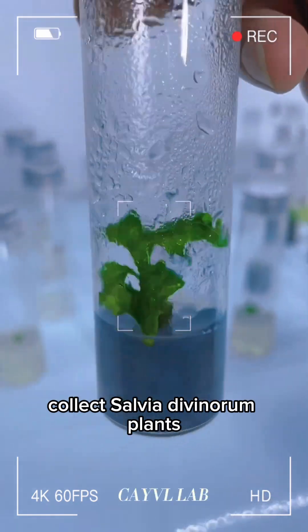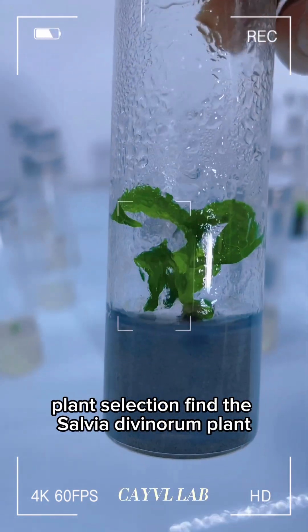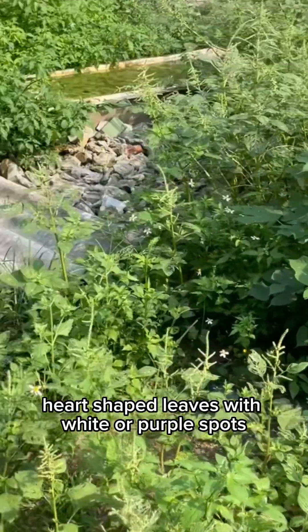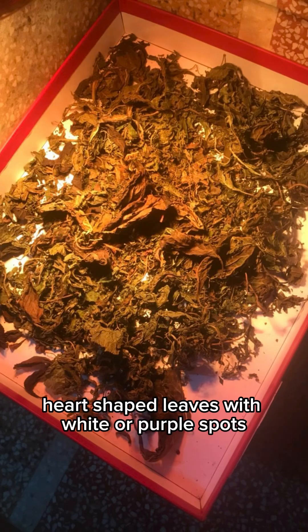Collect Salvia divinorum plants. Plant selection: Find the Salvia divinorum plant. This plant has green heart-shaped leaves with white or purple spots.